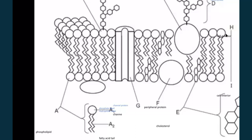H is the cell's exterior, or extracellular fluid. I is the cell's interior — the cytoplasm. E is the cholesterol, and F is a peripheral protein.